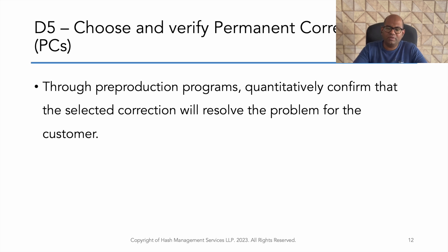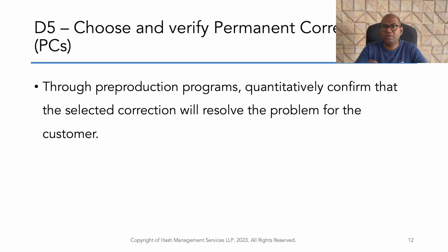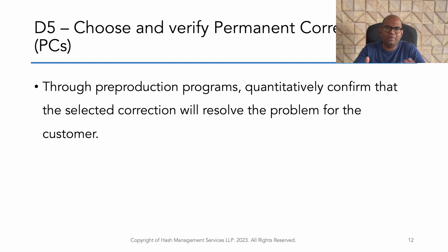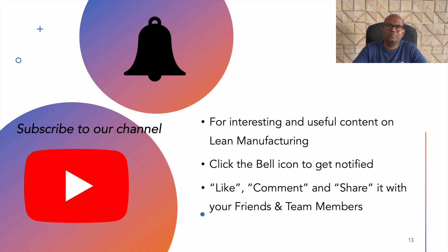D5 is to choose and verify the permanent correction. Based on the solutions planned in D4, this is the pre-production or trial stage. We confirm that the selected solution will actually solve the problem before full implementation. The solution is verified before being finalized in D5.